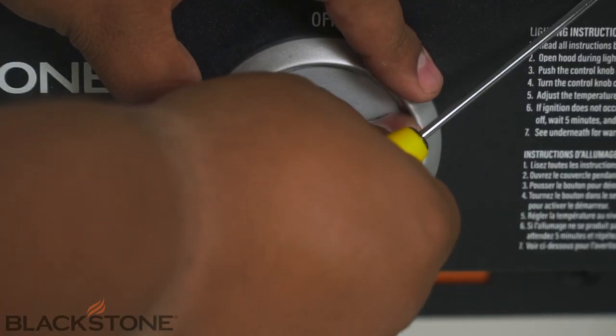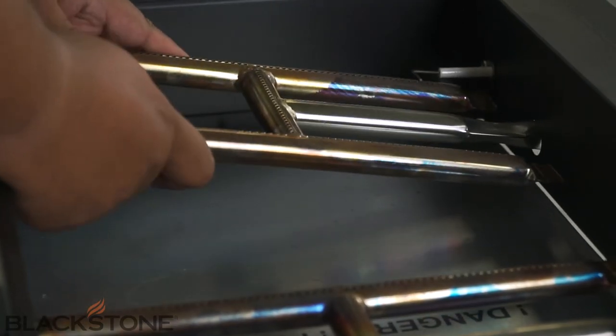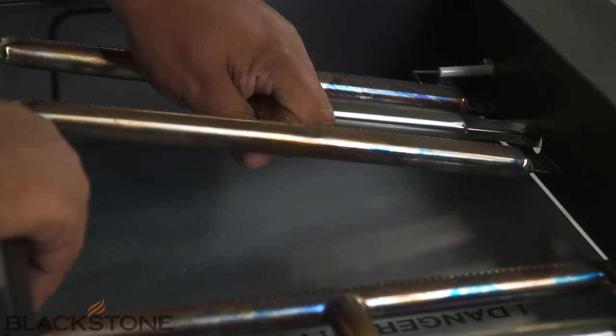Otherwise, you may risk damaging your griddle. To fully remove the burner tubes from the griddle, lift and pull the tube out of its slot once the screws have been removed.